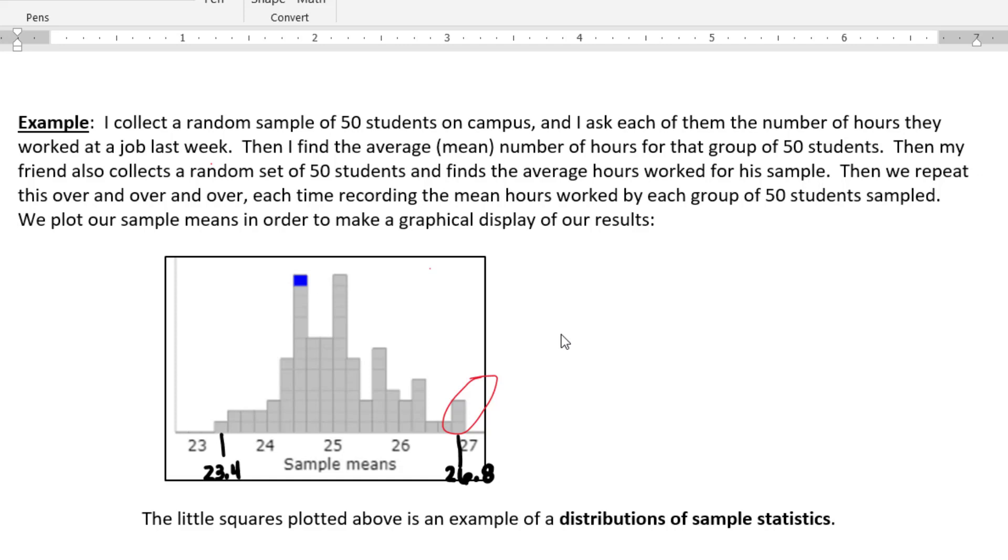So for example, in this distribution, this dot plot that we have here, I've circled in red three little squares which are actually at a value of 26.8. Now that would mean that three times we went out and collected a sample of 50 students on campus and the different groups of 50 students each happened to have an average number of work hours of 26.8 hours worked on average last week.